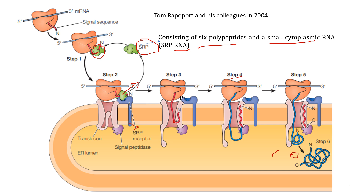Key insight: Tom Rapoport and his colleagues described the translocation through the ER membrane. In both yeast and mammalian cells, the translocon through the ER membrane is a complex of three translocon proteins called the Sec61 complex. This Sec61 complex is conserved across both yeast and mammalian cells. That's all for today's video — I hope this helps. Thank you.